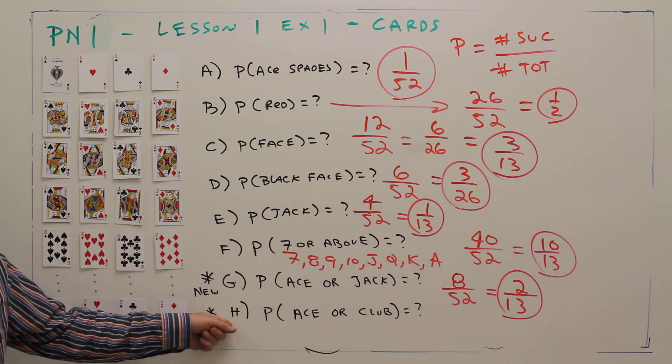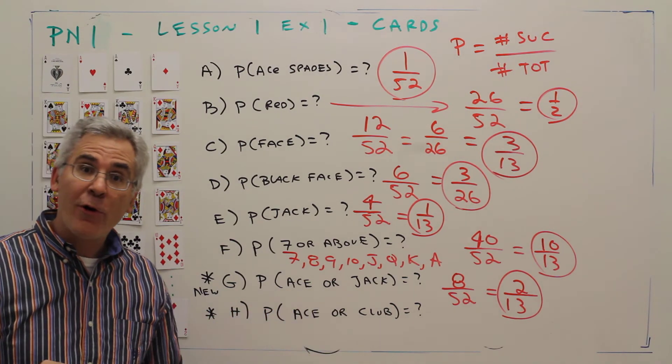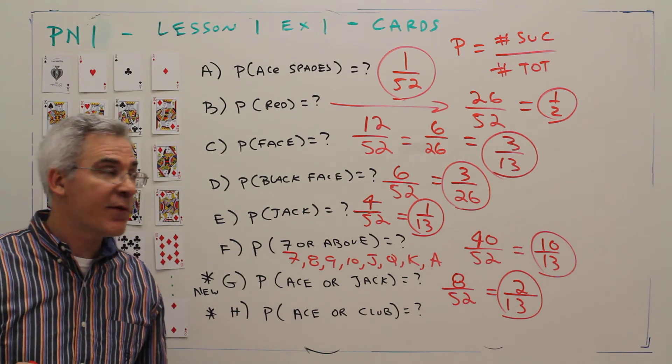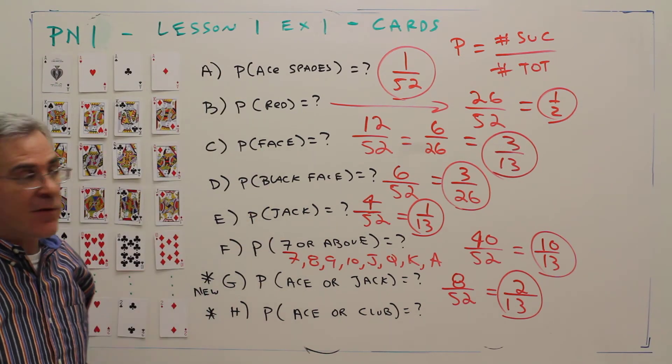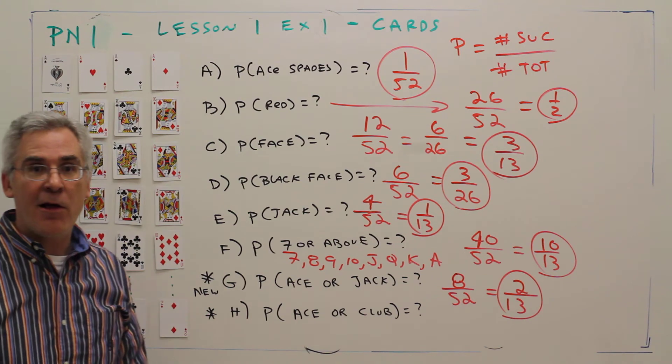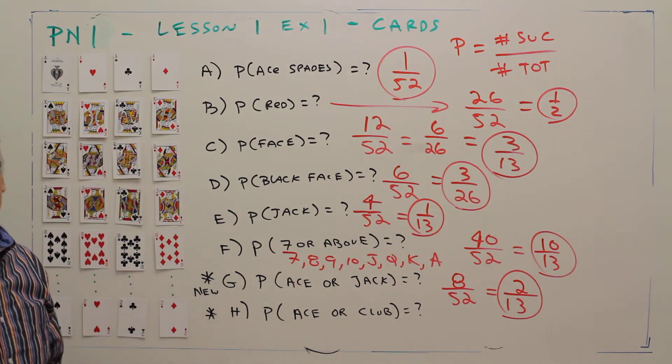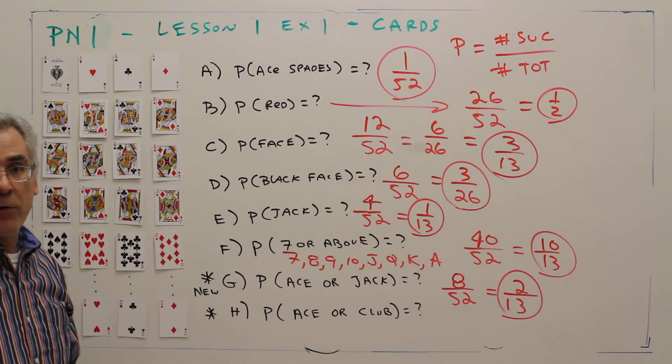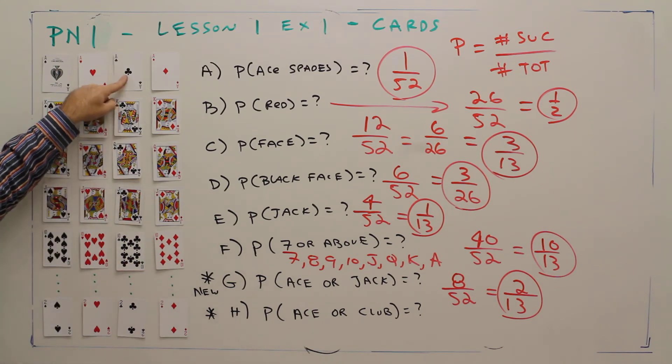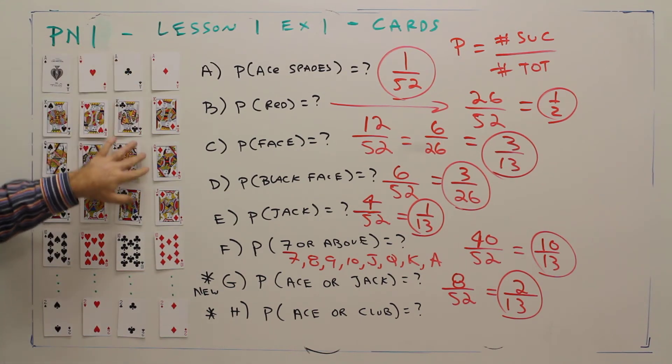Part H: This next one, you've got to be careful. Probability of an ace or a club. Here's the common mistake: Oh, there's 4 aces and 13 clubs, so I've got 17 successful outcomes. Well, you're double counting the ace in both the aces and the clubs.